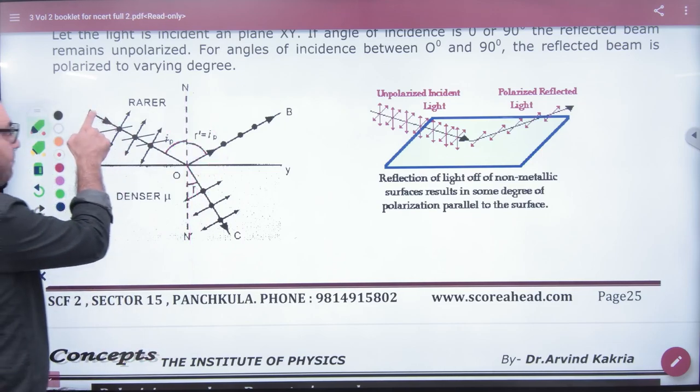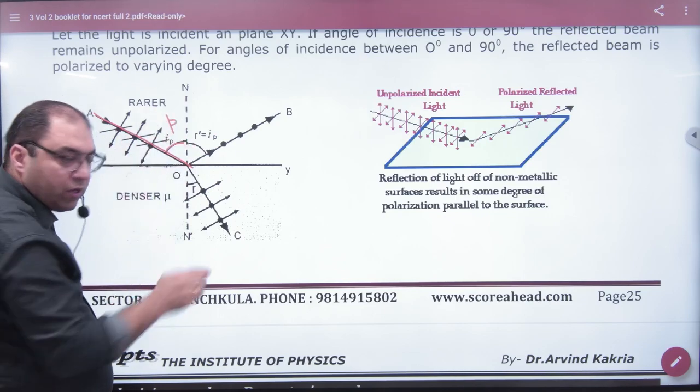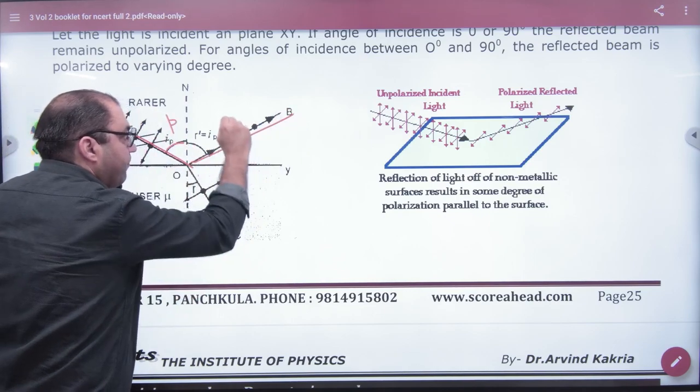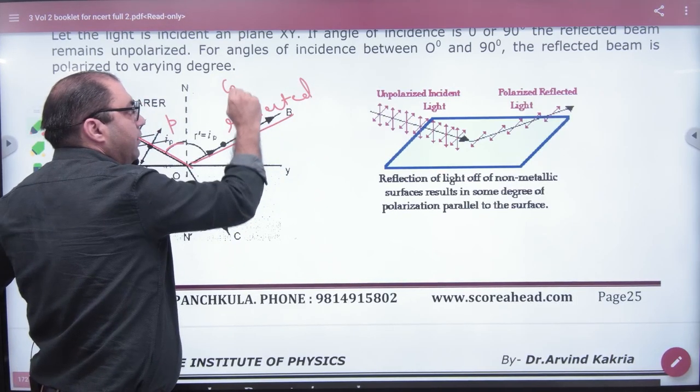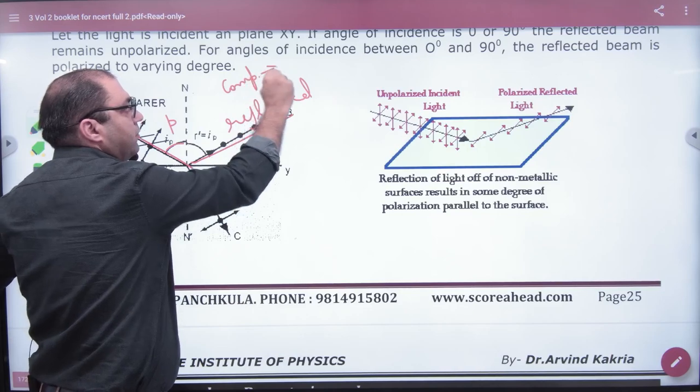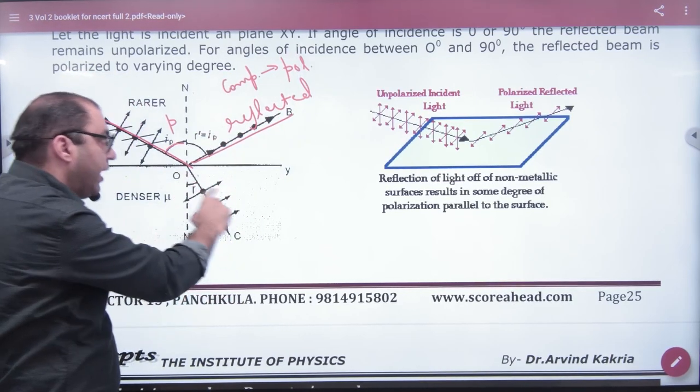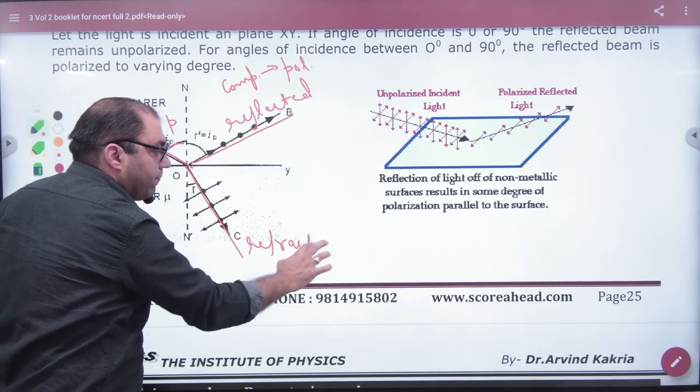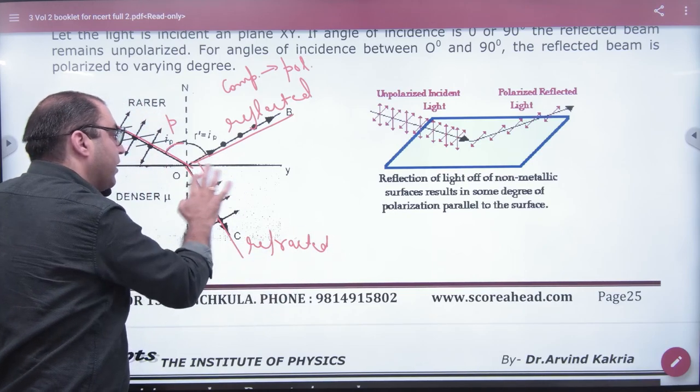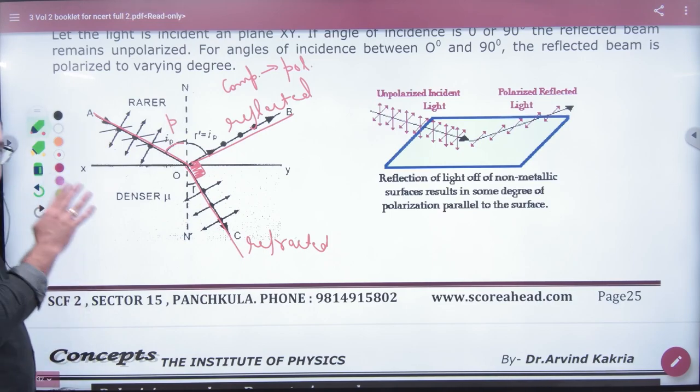That if you have incident at polarizing angle, so reflected ray, reflected ray is completely polarized. Reflected ray is completely polarized. And reflected and refracted ray, what will happen in this case? 90. This result is. If light reflection is completely polarized, what will happen in this case? 90. This result is objective.